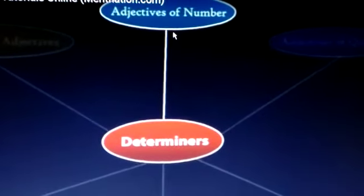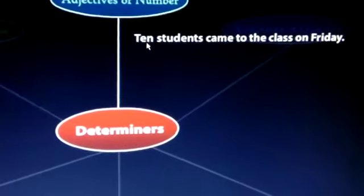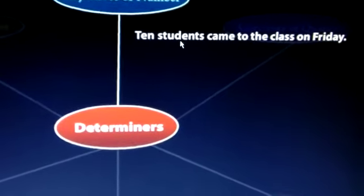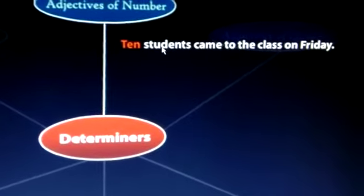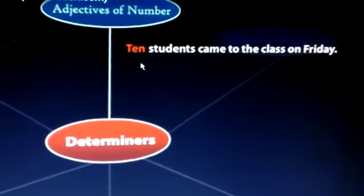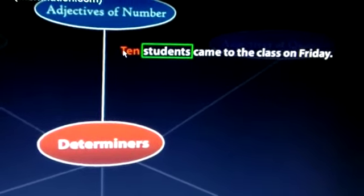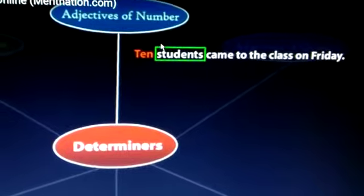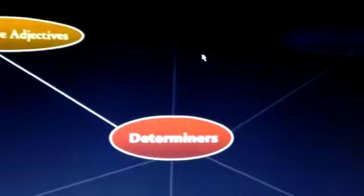Now adjectives of number. Number means 2, 3, 4. Here, 10 students came to the class on Friday. How many students? Here students are the person, people, name of the person, place or thing. Person. And how many students? 10. 10 students is a number. 10 students is a number determiner. Kitne the? Kya tha? That we have to identify.